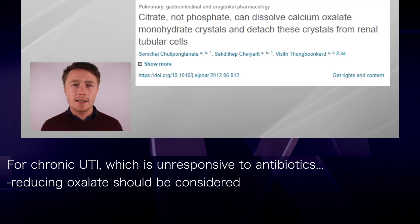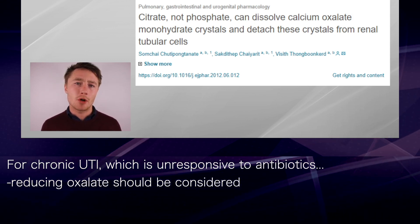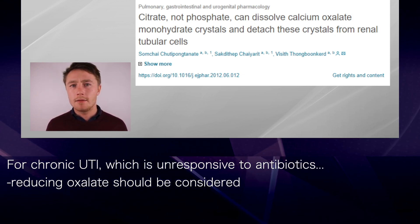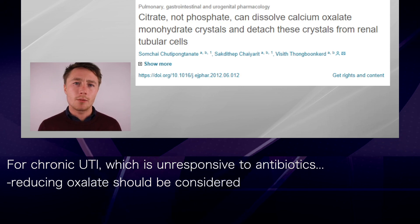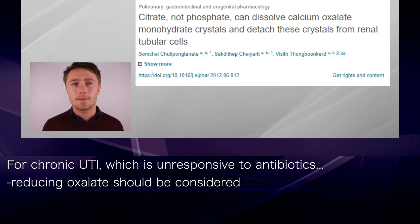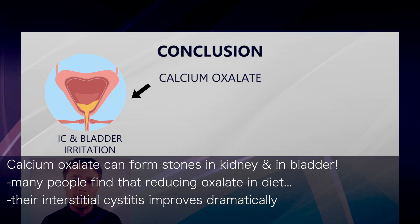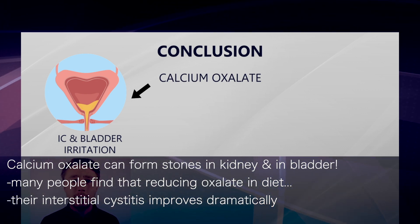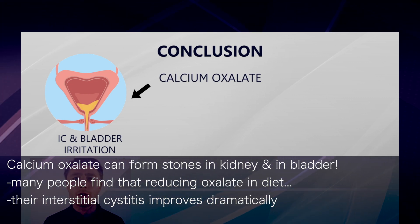So in cases of chronic UTI, which is practically unresponsive to antibiotic therapy, I believe that oxalate is probably somewhere that people should really consider. Calcium oxalate can form stones in the kidneys, but it can also form stones in the bladder. And many people actually find that when they reduce oxalate in the diet, the interstitial cystitis improves drastically.